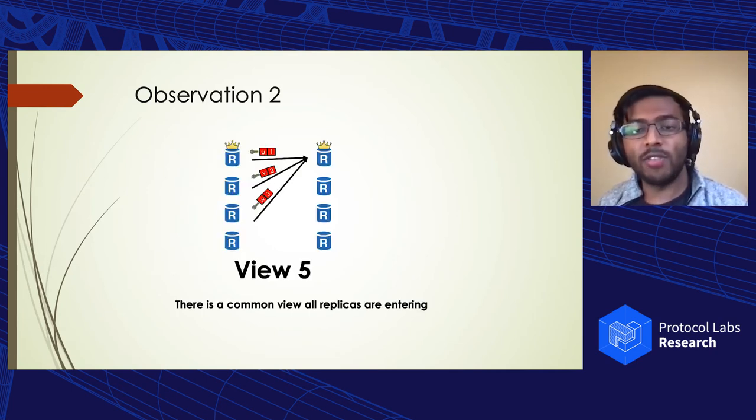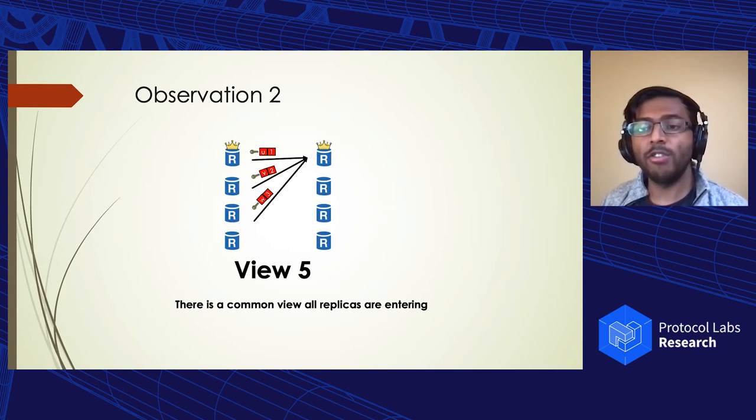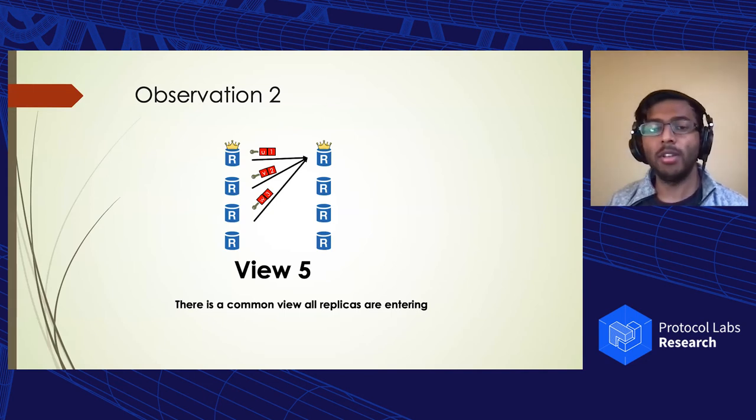Our second observation is that replicas are sending view change messages to begin a new view. And then this new view that they're going to enter is going to be common among them. So in this case, in this example, we have view changes all for going to view five.